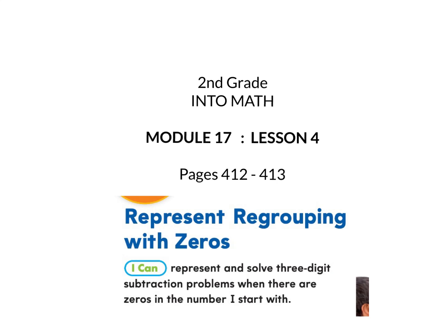This is 2nd grade Into Math Module 17, Lesson 4: representing regrouping with zeros. I can represent and solve three-digit subtraction problems when there are zeros in the number I start with. We will begin on page 412. Please gather your workbook and a pencil.